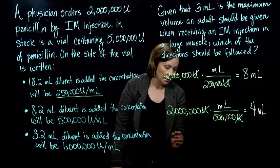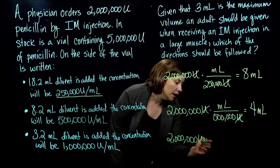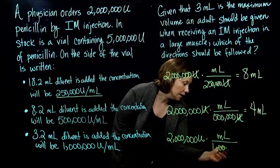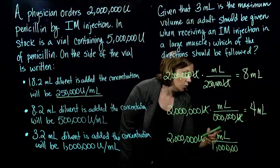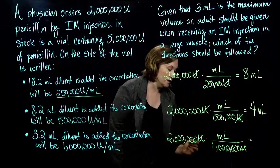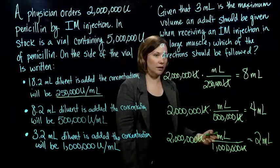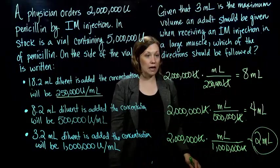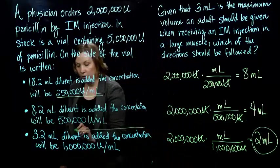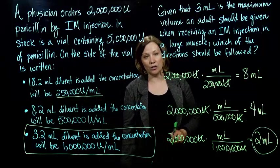So we go to the last one. 2 million units is what's been ordered, and we're multiplying by the concentration we have, which is 1 milliliter per 1 million units. The units cancel out again, and 2 million divided by 1 million is 2. So 2 milliliters — that's the one we would choose because 2 milliliters is less than our 3 milliliter maximum. We would follow the directions for the most concentrated version on the label.